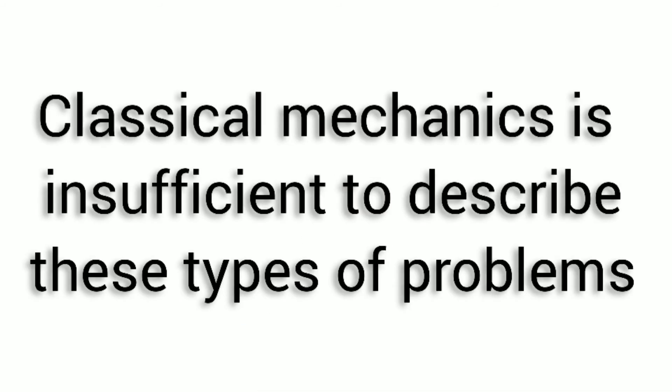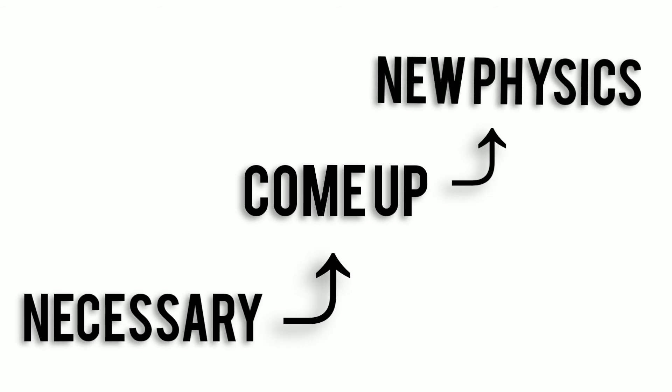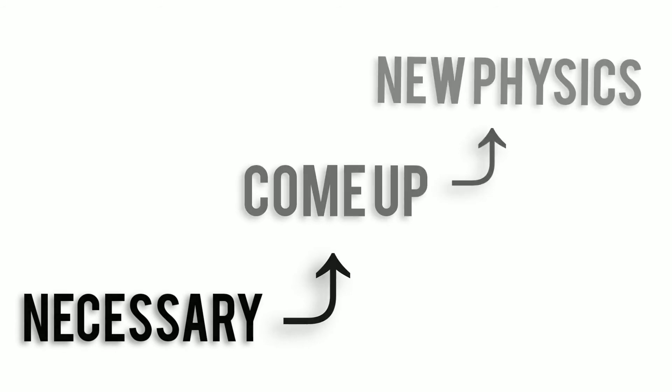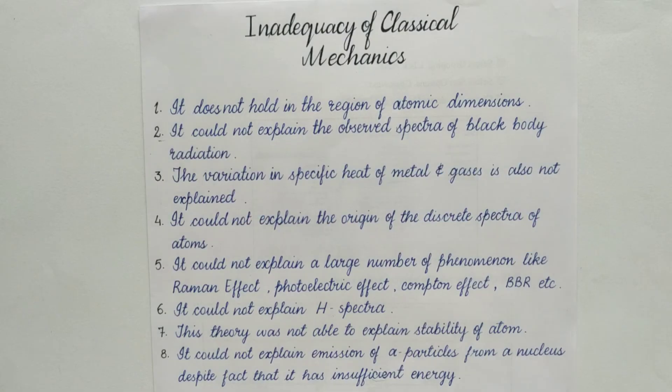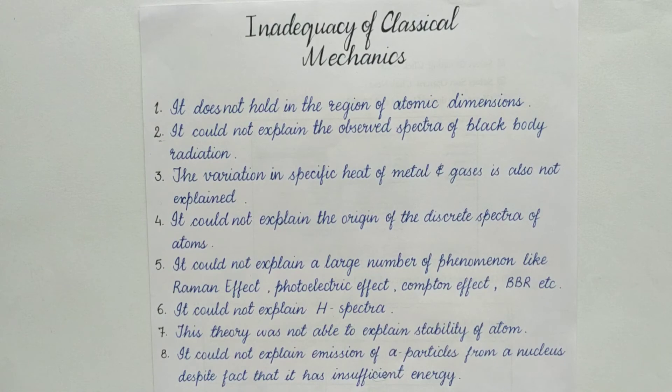Clearly classical mechanics is insufficient to describe these types of problems. And it got necessary to come up with a new physics to describe these types of problems. And that physics is called quantum mechanics. The inadequacies of classical mechanics led us to the origin of quantum mechanics.